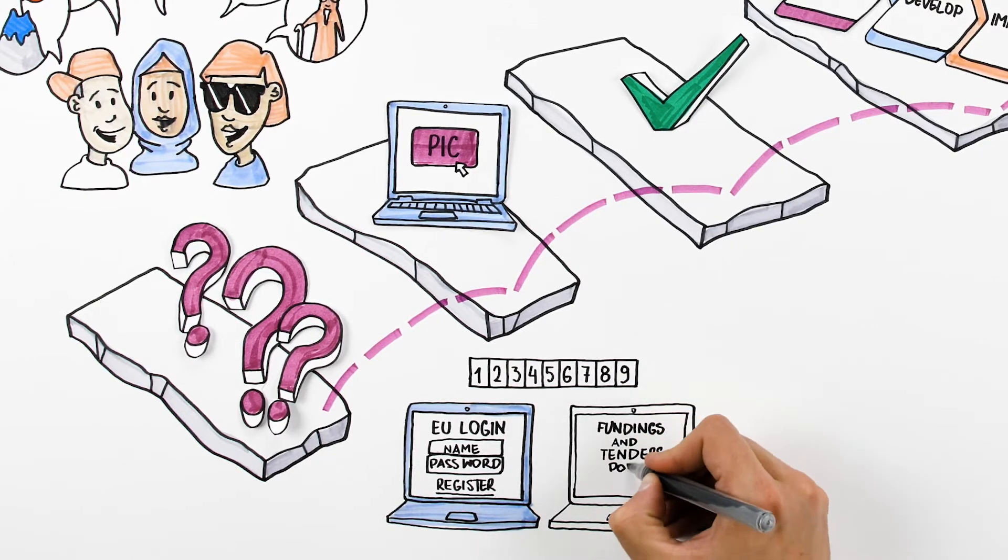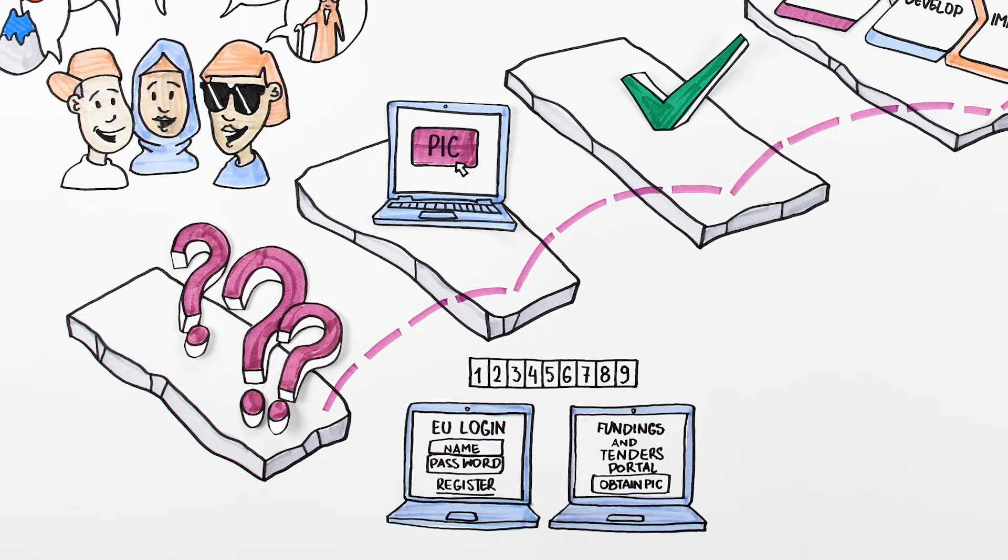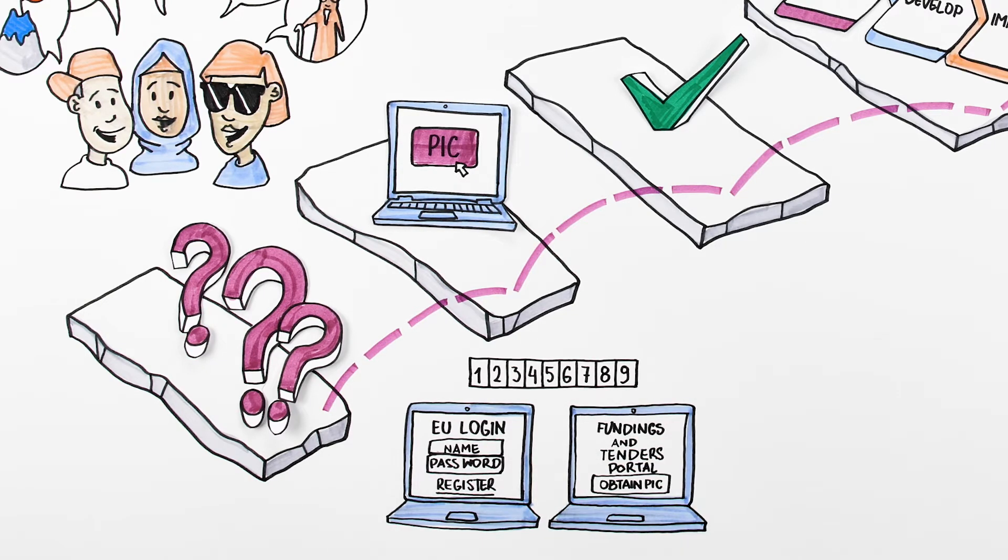Obtain a PIC through registering on the funding and tenders portal, previously known as participant portal, which is a single entry point for the electronic administration of the core projects.